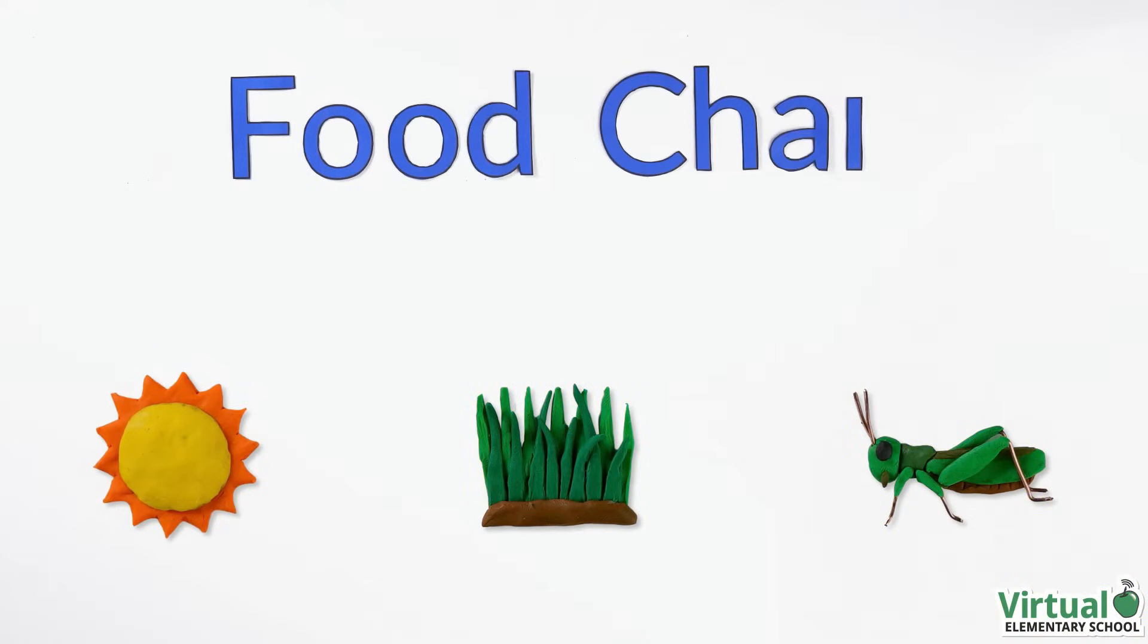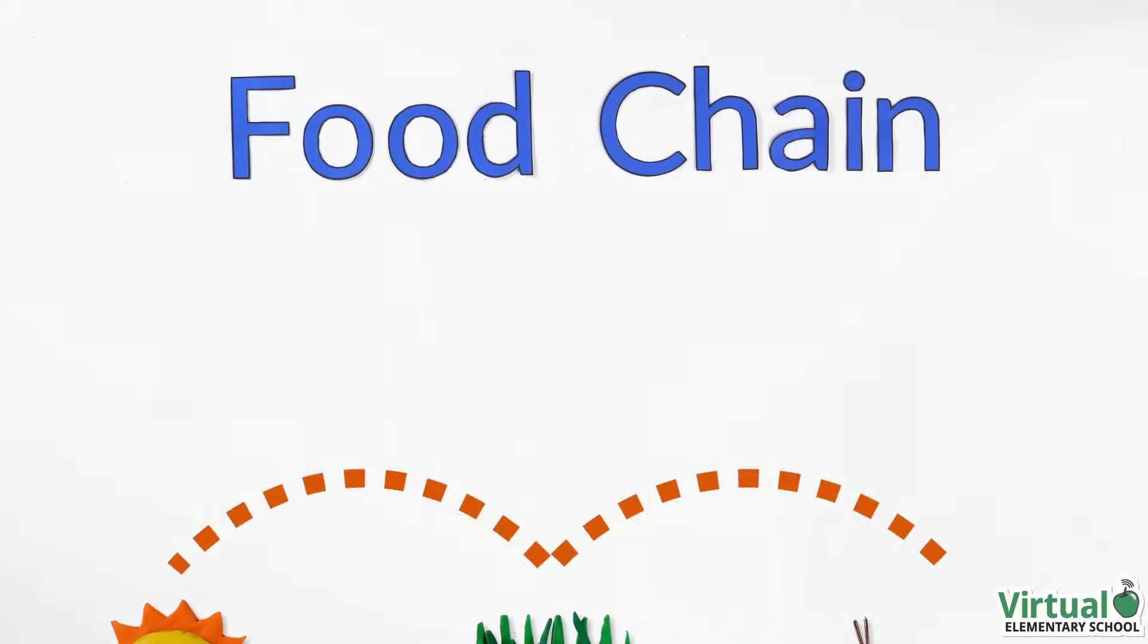A food chain is a diagram that shows how energy is transferred from the sun to living things. Let's look at an example of a food chain.